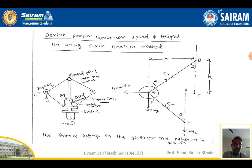The height h is measured from the center point of the mass of the ball to the top pivot. The inclination angle of the upper arm to the vertical is taken as alpha, and the lower arm angle is taken as beta. During rotation, tension is created in both arms: the upper arm tension is T1 and the lower arm tension is T2.